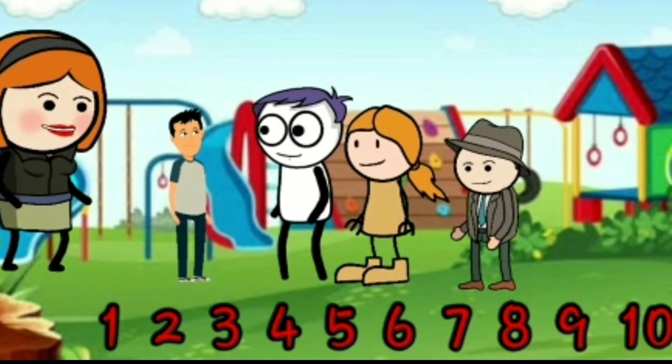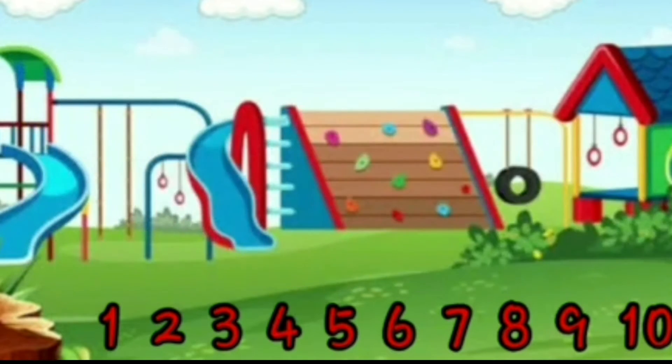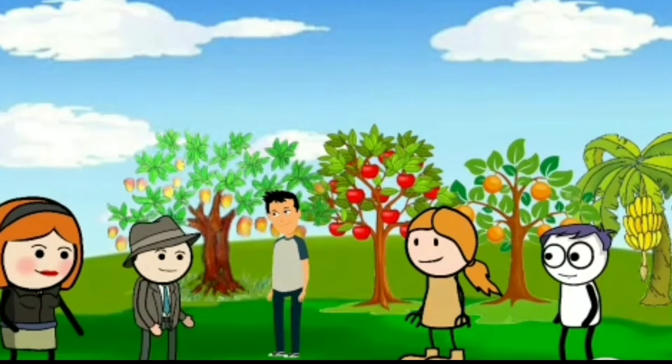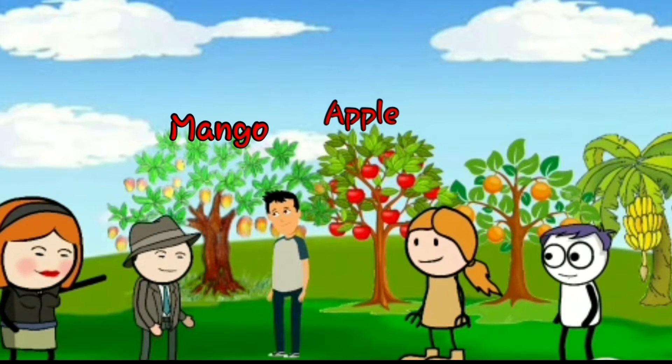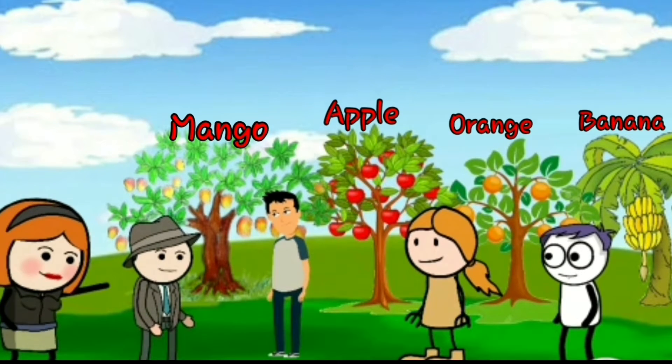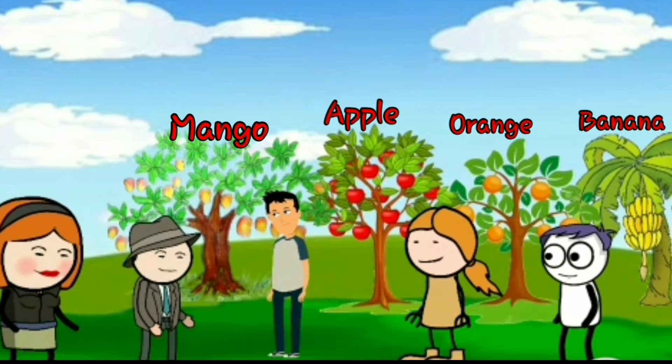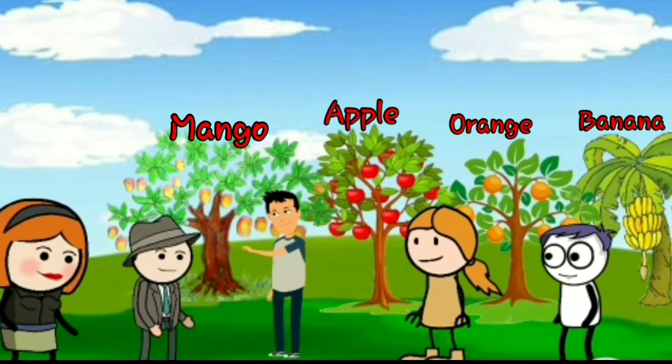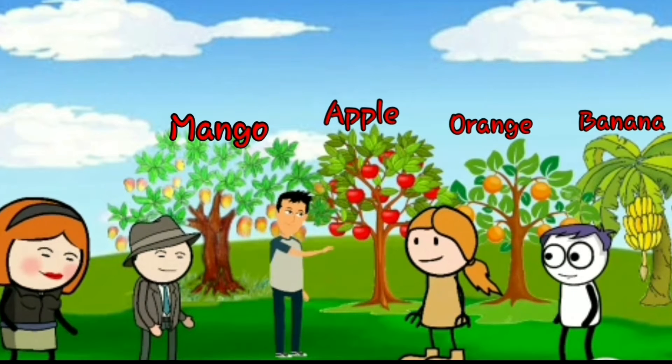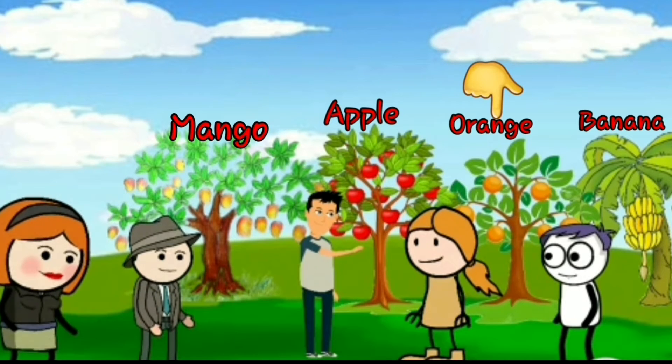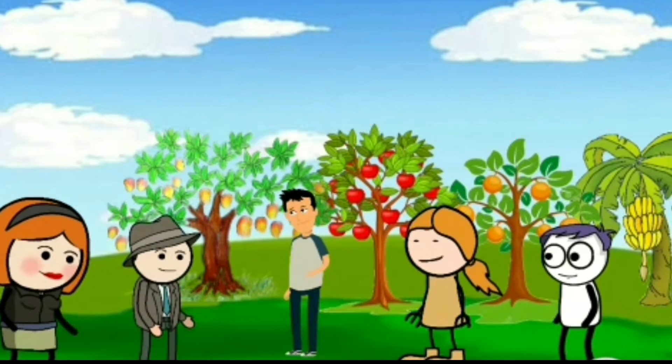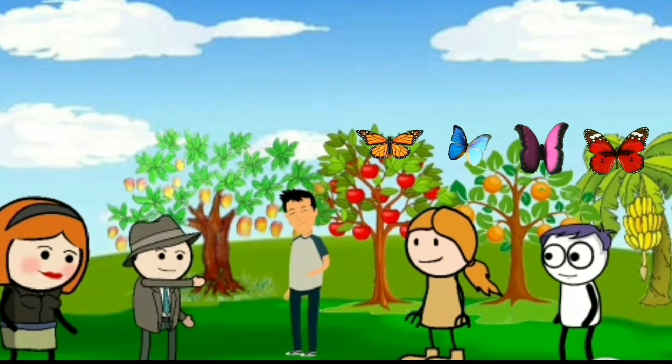Children, let's go to the other side! Children, there are 4 trees. Mango tree, apple tree, orange tree and banana tree. Can anyone tell me which tree is between apple tree and banana tree? Teacher? Yes Akshar? Teacher, orange tree is between apple tree and banana tree. Very good boy Akshar!